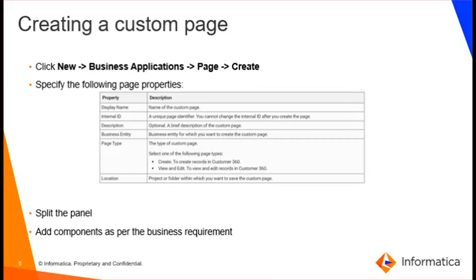Now we will see the overview of creating a custom page. You can create and design custom pages for your application based on your business needs. Add one or more tabs, split the page into sections, and add components. The components differ based on the business entity and page type you have selected. We will start with clicking the new button, then business applications, then we click on page, and we click on create.